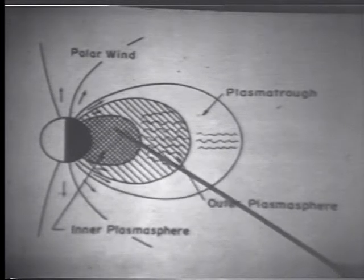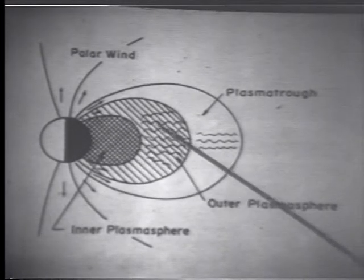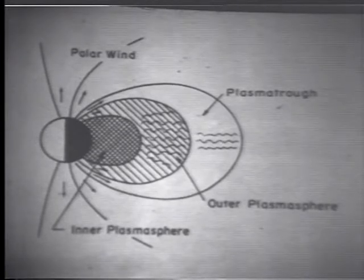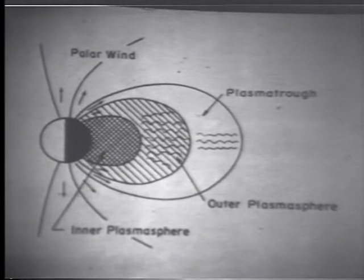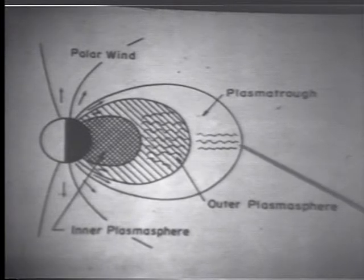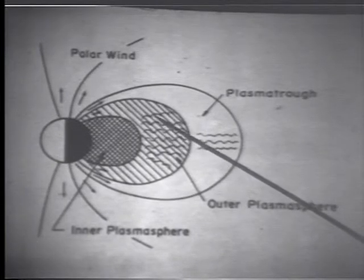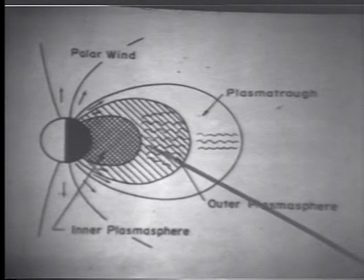And I'd like to draw a distinction between the inner plasmasphere and outer plasmasphere in the sense that we know that there are very strong impulses of westward electric field which drive plasma inwards on the night side. And when this happens, much of the plasma that's stored along the magnetic flux tube is jammed down into the ionosphere. It does this.